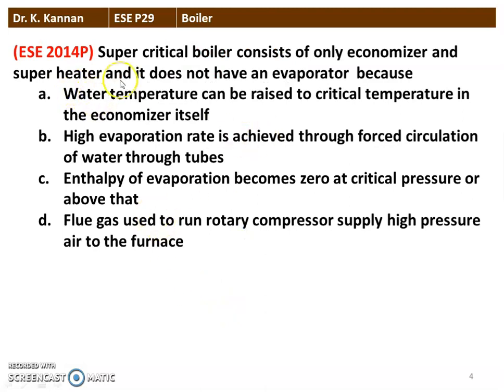Next question again from the 2014 question paper: a supercritical boiler consists of only economizer and the superheater and does not have an evaporator. Four reasons are given: water temperature can be raised to critical temperature in the economizer itself; high evaporation rate is achieved through forced convection of water through the tube; enthalpy of evaporation becomes zero at critical pressure or above; flue gases used to run the rotary compressor supply high pressure air to the furnace. The correct option is that enthalpy of evaporation becomes zero at critical pressure or above. Since the supercritical boiler operates above critical pressure (above 230 bar), enthalpy of evaporation is zero, so the evaporator is not required — it directly heats water and converts it into superheated steam in the superheater.